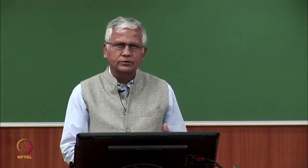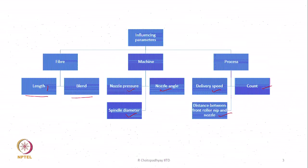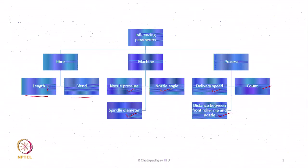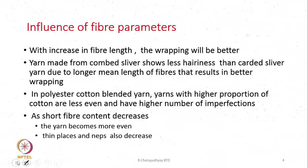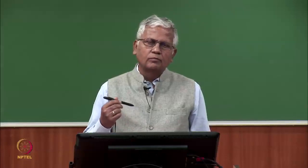Fibre parameters include length, fineness, and the proportion of two fibres when blended together. Machine parameters are nozzle angle, spindle diameter, and nozzle pressure — which could also be considered part of process parameters. Process parameters are delivery speed, the count of the yarn to be processed, and the distance from the front roller nip to the nozzle mouth. All these parameters have some effect on processability and yarn properties.